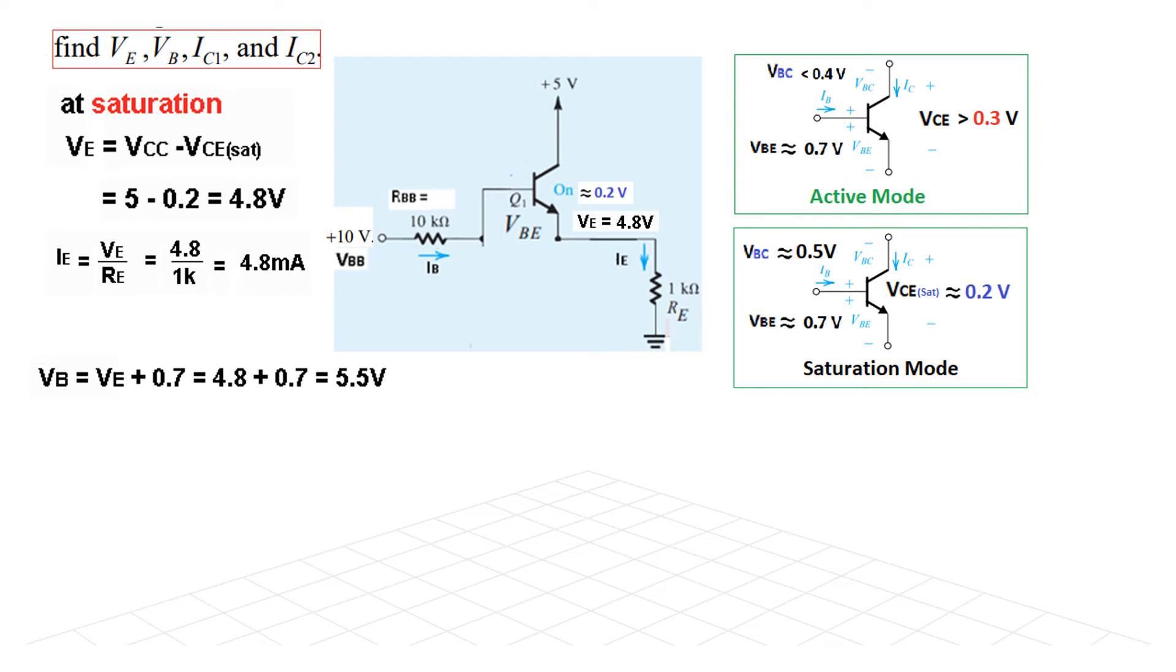Now once we know VE, we can find IE, which is VE over RE. Then IE is 4.8 milliampere. The next is to find VB.